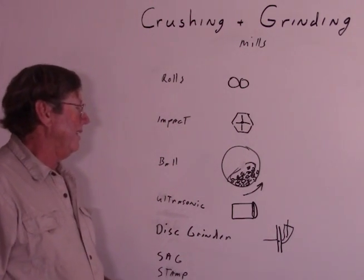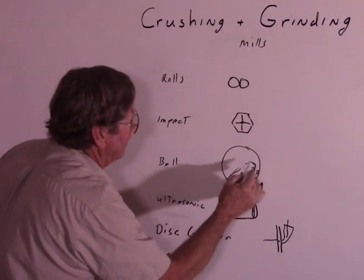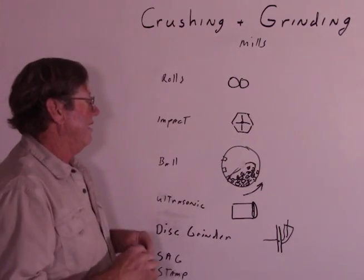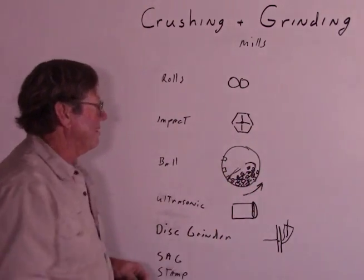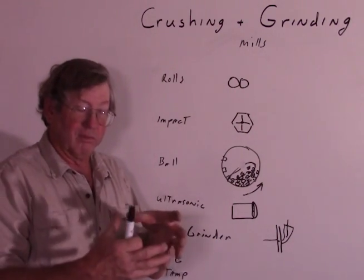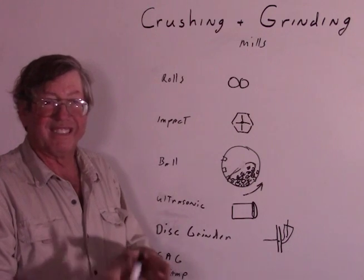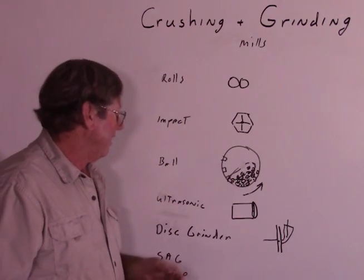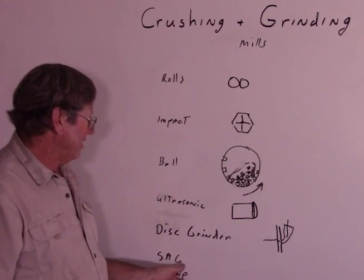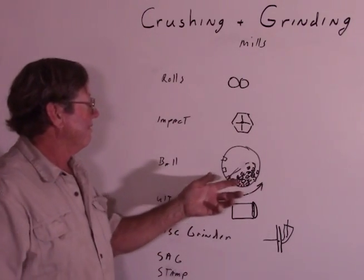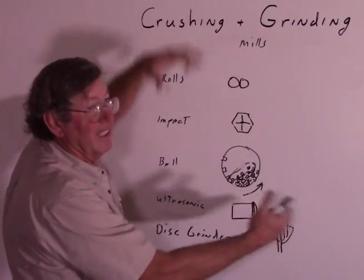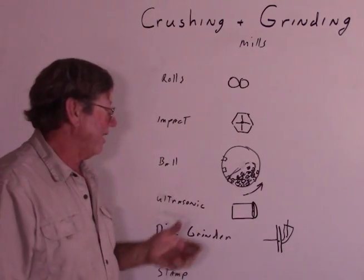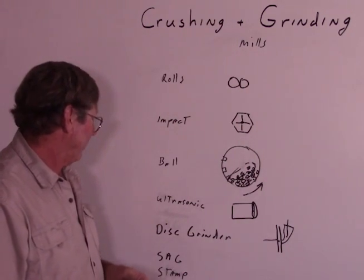A SAG mill is like a ball mill but larger in diameter with lifter bars inside. It picks the charge up and drops it a long distance. You actually put in large rocks too — four, five, six inch diameter — and it works with the balls to grind them up. SAG stands for semi-autogenous grinding; autogenous means the rock is grinding itself. The problem is they have to be very large in diameter — the smallest I've heard is like 15 feet. So don't worry about it for anything less than a whole lot of tons per hour.